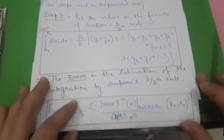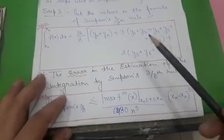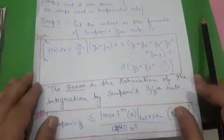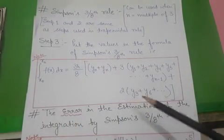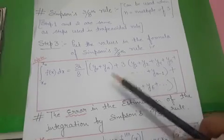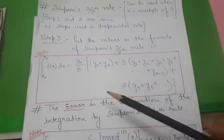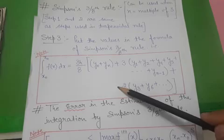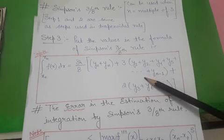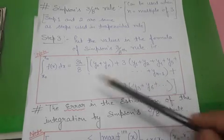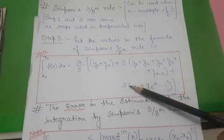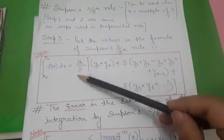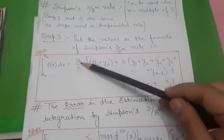The final step, step three, is to put all these values into the formula for Simpson's 3/8 rule. You must learn this formula because without it you cannot solve the question.